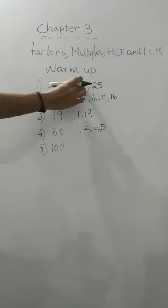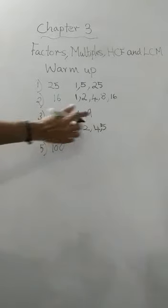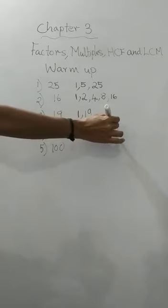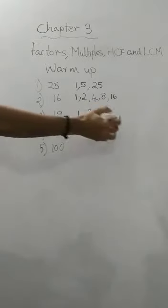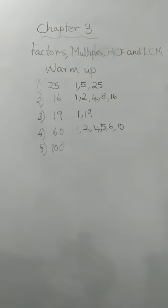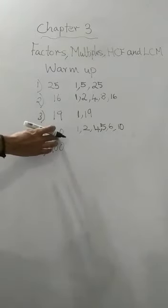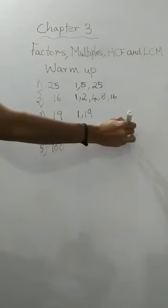6, yes, 6 into 10 is 60. So 6 is also a factor. 7, 8, 9, no. 10, yes, 10 into 6. 10 is also a factor. Then 11, 12, yes, 12 comes. 12 into 5 is 60, so 12 is also a factor.